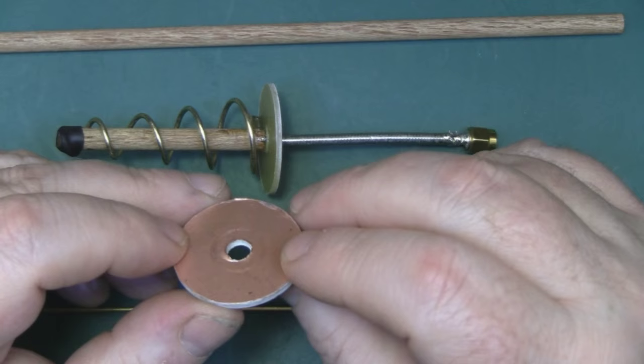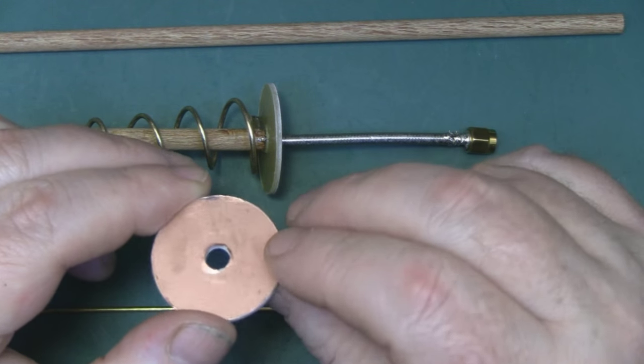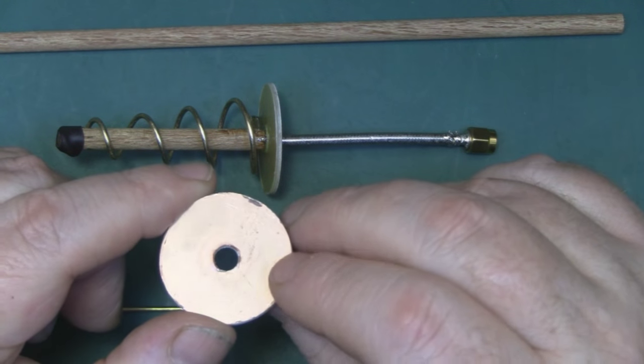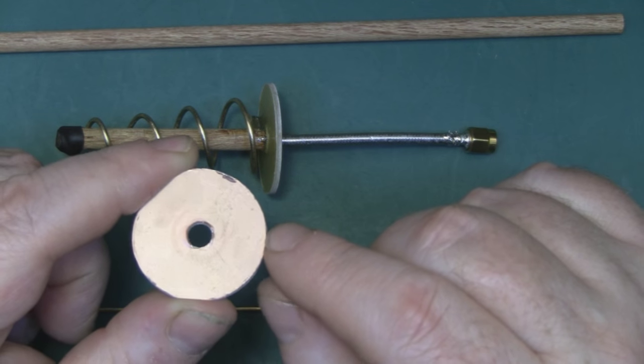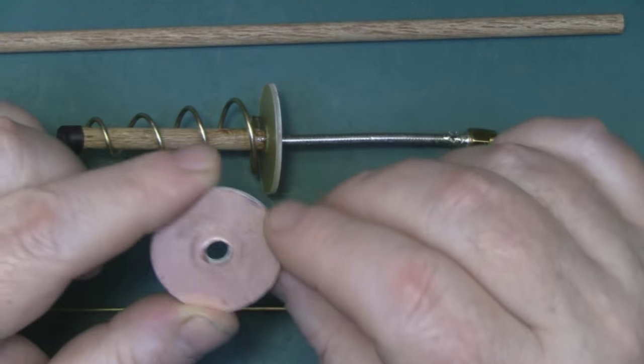For the back reflector, I'm using single-sided PCB board again, but this time I've cut it out with a circular saw. The circular saw is 35mm, but by the time it cuts this out, this is actually 34mm, so this is what I'm going to use for the back reflector.